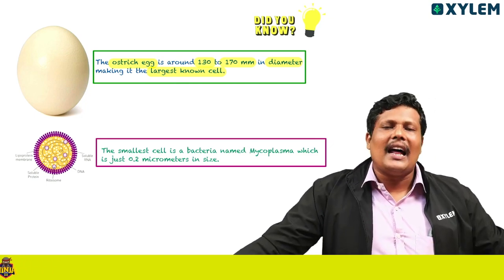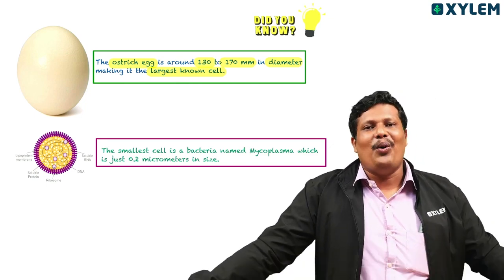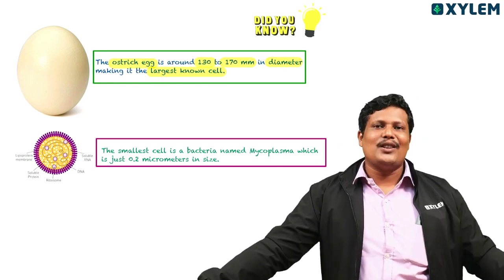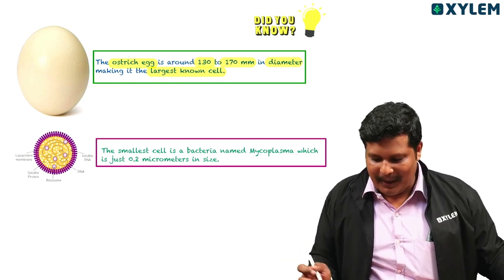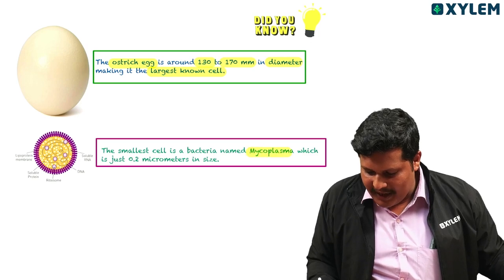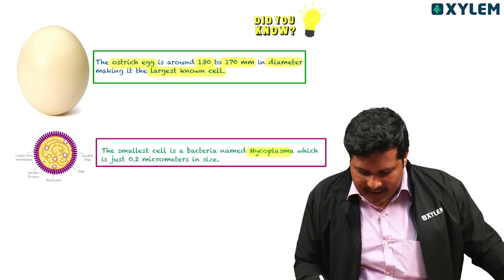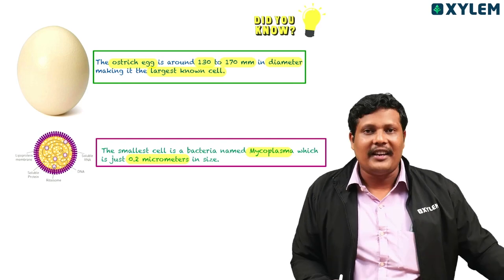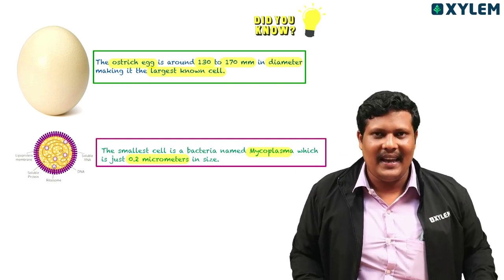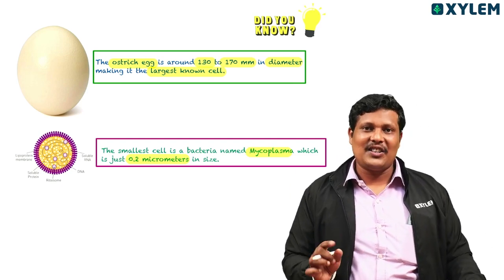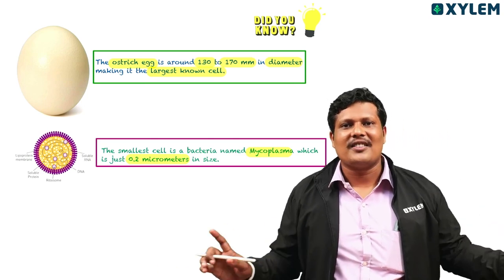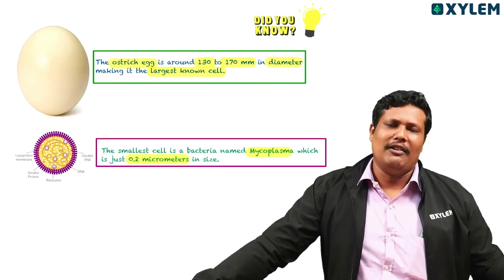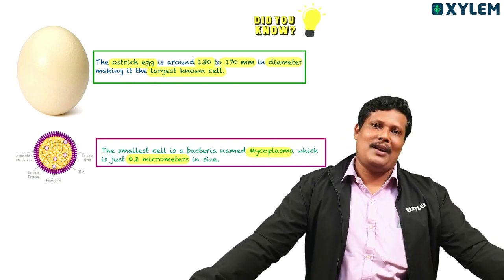Now we'll discuss the smallest cell. The smallest cell is mycoplasma. It measures 0.2 micrometers. The largest cell is the ostrich egg, while the smallest cell is mycoplasma.